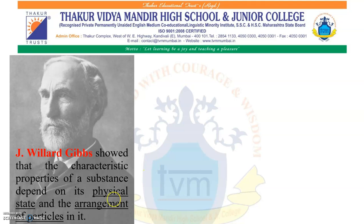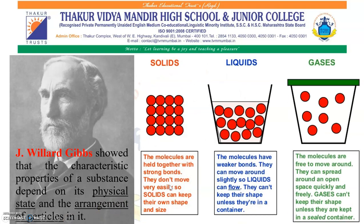Physical state means whether the substance is in solid, liquid or gaseous state. The second factor is the arrangement of particles. To understand this, we first need to understand the meaning of particles. All substances in our surroundings are made up of very tiny particles. The tiniest one is called the atom. Atoms combine together to form molecules — the larger particles. The picture shows the arrangement of molecules of solid, liquid and gases, and how this arrangement affects the properties of the substance.